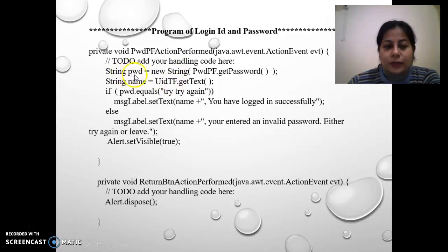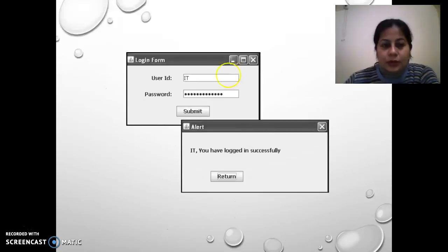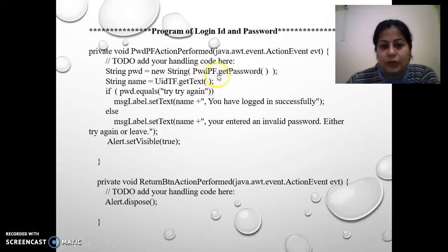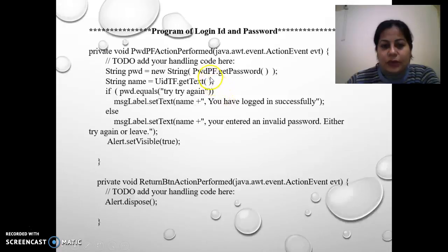The variable's data type is String, the variable name is PWD, and I have stored in it: new String assigned from PWD_PF.getPassword(), because we want to get the password. The name of the password text box is PWD_PF, so I call PWD_PF.getPassword() to retrieve the password from that field.